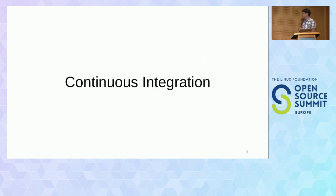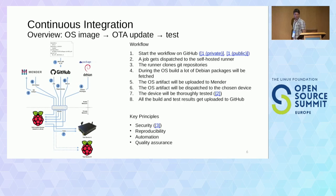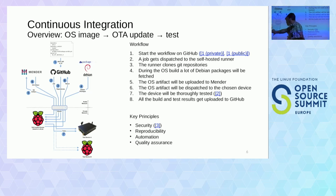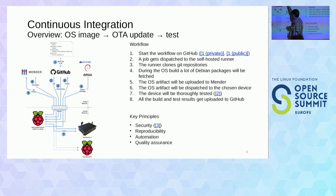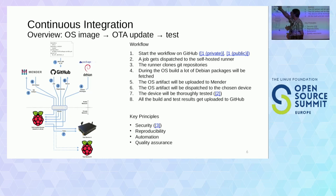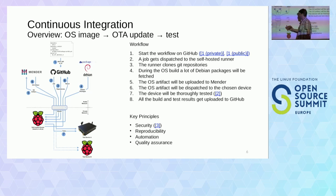Let's start with continuous integration. We would like to build an operating system image for an IoT device that gets automatically dispatched and tested. Down here we have a private network with devices. Up here we have the internet, and here we have a self-hosted GitHub runner. On GitHub we enter values like which device we want to test, what kind of configuration, and of course the ID of that device.